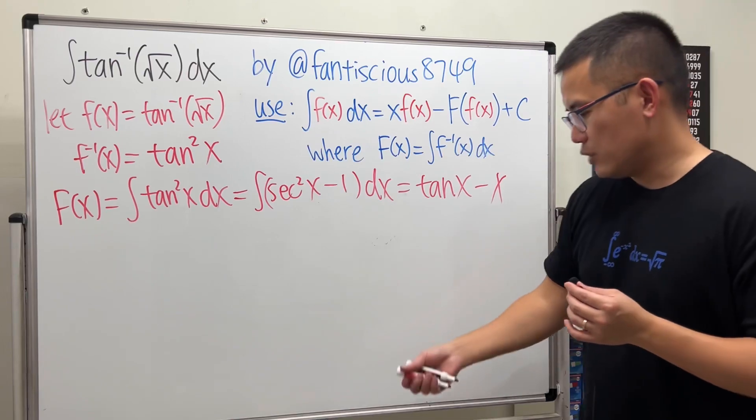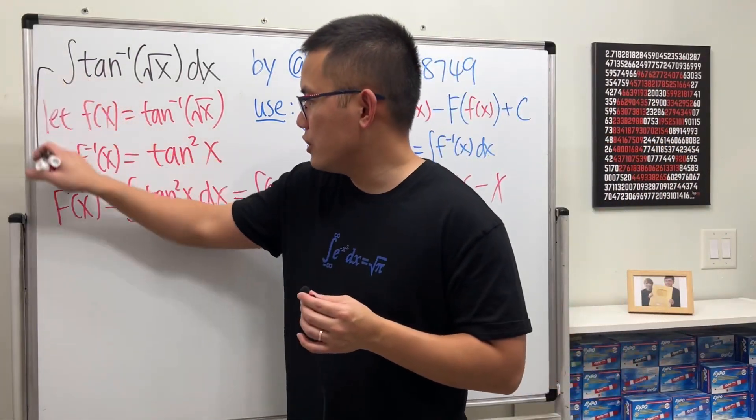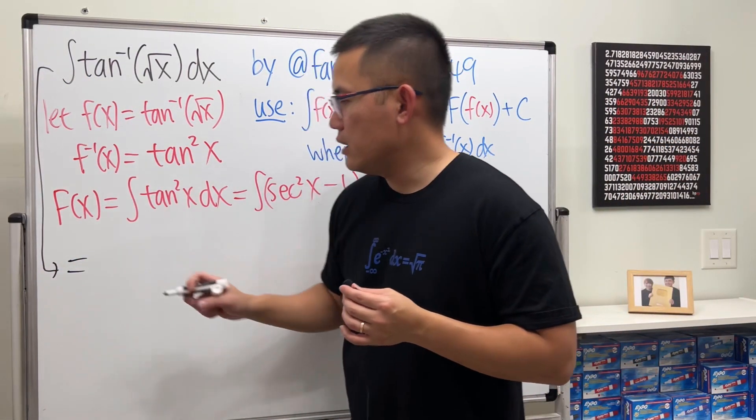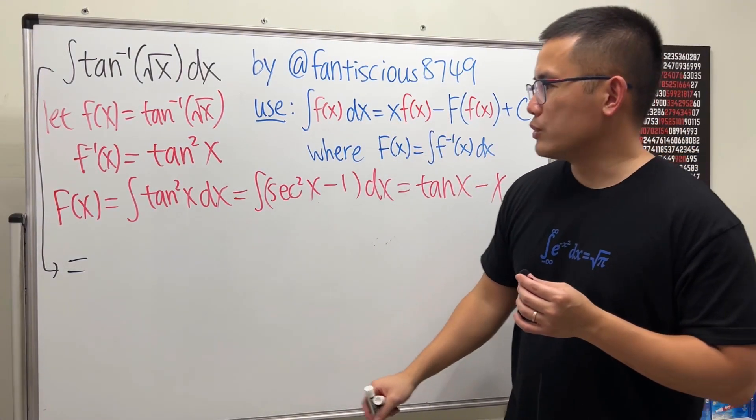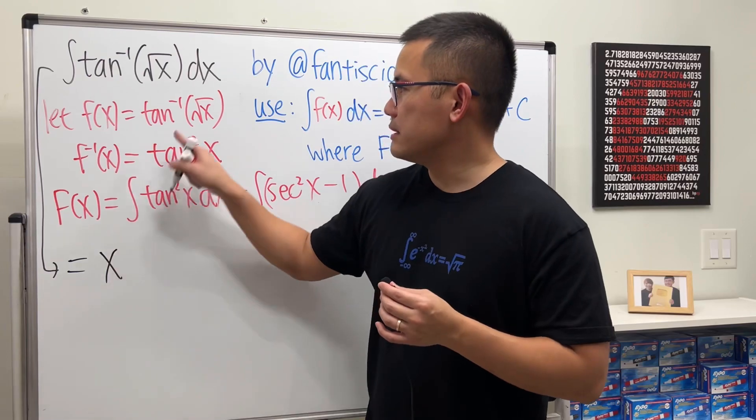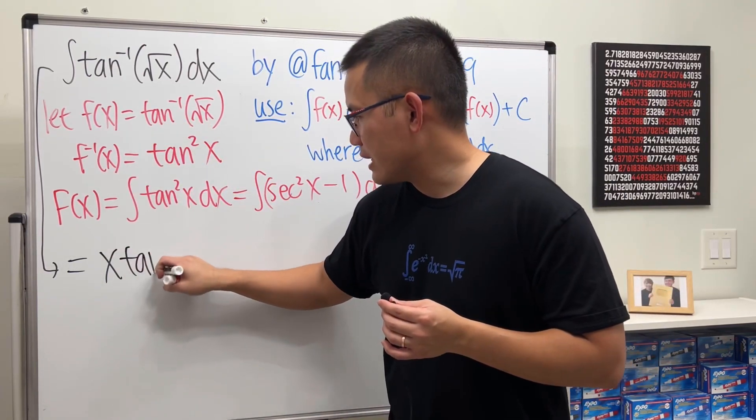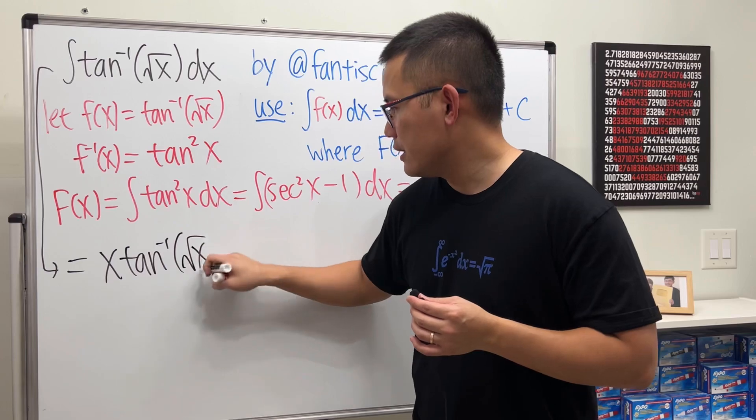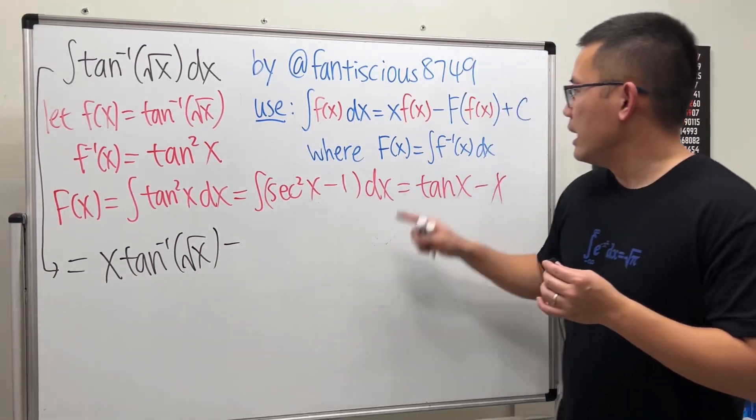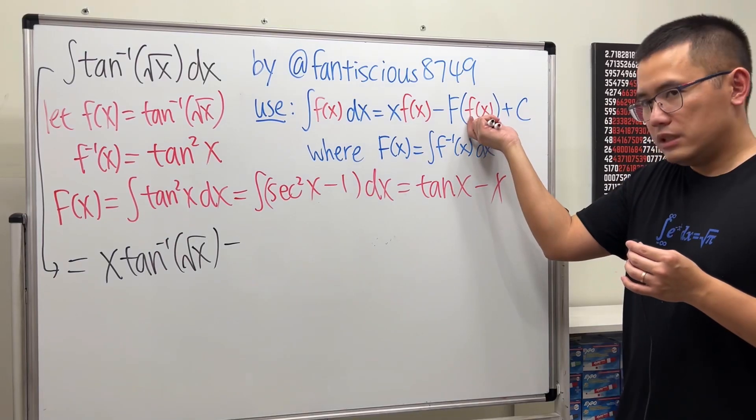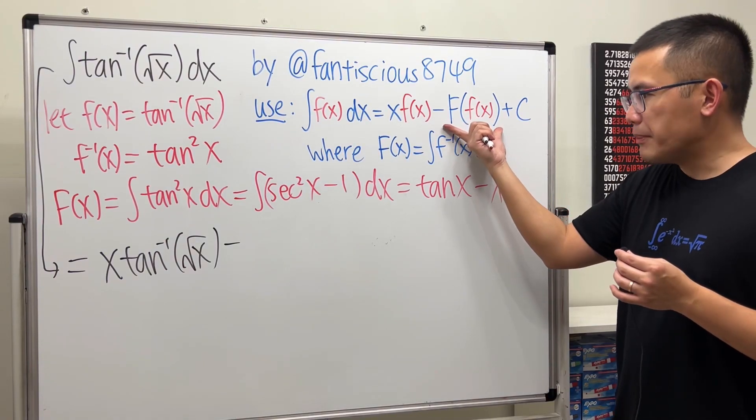Now we can just plug in everything, and it will be done. So ladies and gentlemen, this right here is going to be first x times f of x. So I will just have x times f of x, which is inverse tangent of x. Then minus, I have to put little f of x into capital F of x.